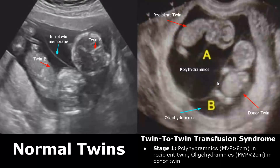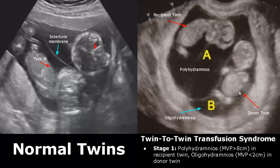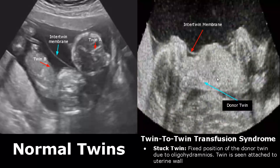Twin-to-twin transfusion syndrome has five stages. In stage 1, polyhydramnios is seen in one twin and oligohydramnios in the other. The twin with polyhydramnios is the recipient twin and the twin with oligohydramnios is the donor twin. Stuck twin can occur in the donor twin — due to very low amniotic fluid, the donor twin may get attached to the uterine wall and have a fixed position. This is the intertwin membrane resting above the stuck twin.